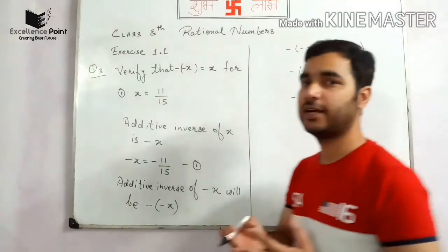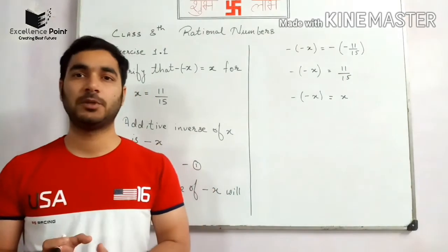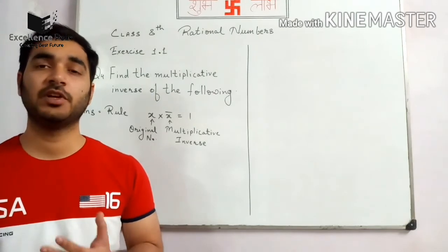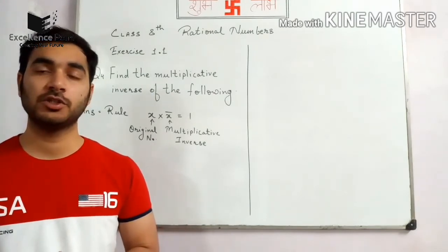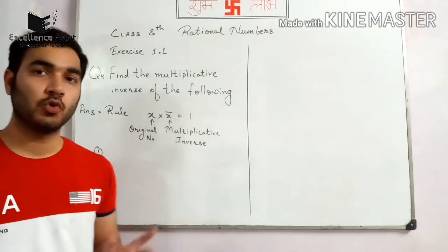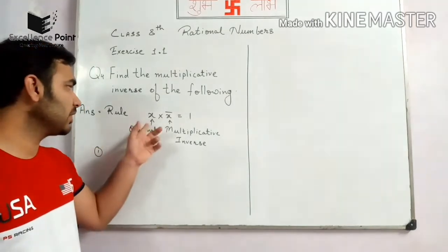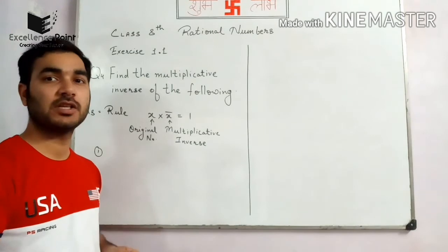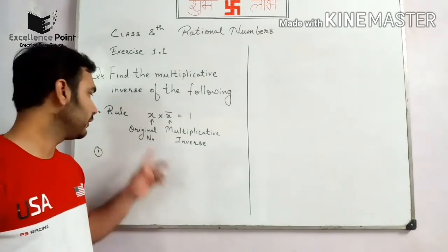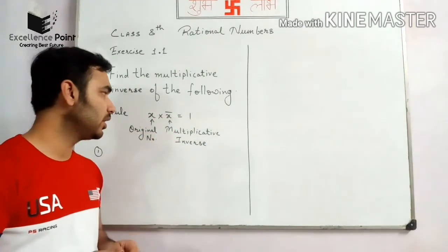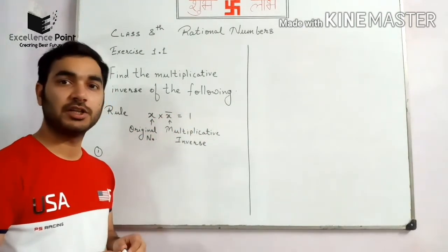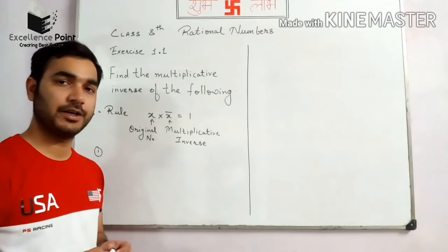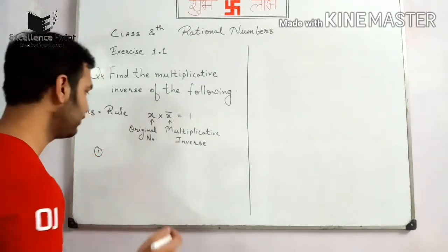We have studied that minus of minus of x will be equal to x. Now question number 4 says that we have to find the multiplicative inverse of the following numbers. The rule says that when the original number is multiplied by the multiplicative inverse, the result should be 1 — where x is the original number and x-bar is the multiplicative inverse. That 1 is the multiplicative identity.